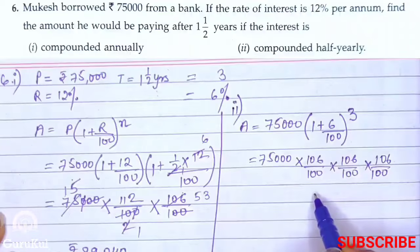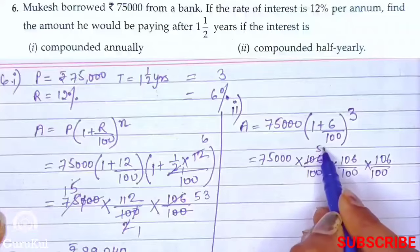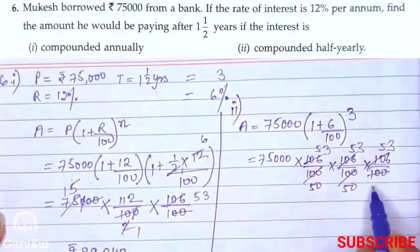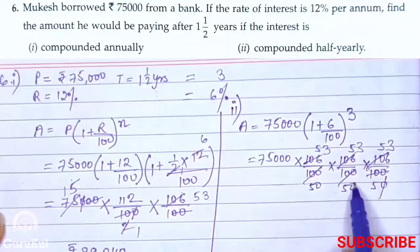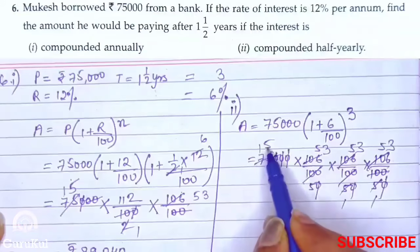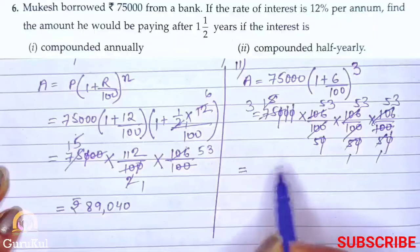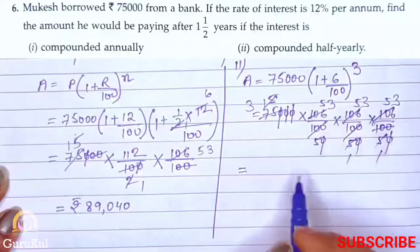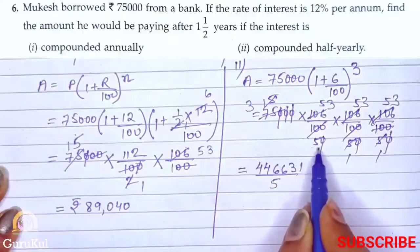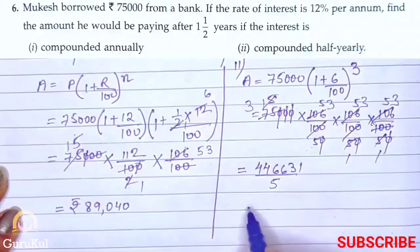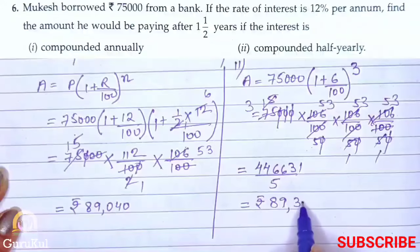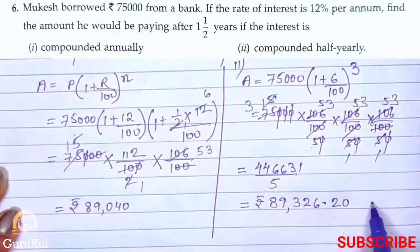We reduce 106/100 to 53/50 in all three cases. After cancelling equal zeros and multiplying: 3 × 53 × 53 × 53 in the numerator divided by 5 in the denominator. Converting to decimal, our amount comes to Rs. 89,326.20. This is the answer for the second part.